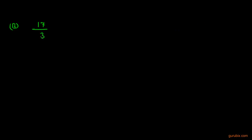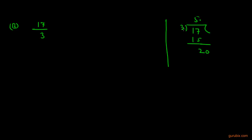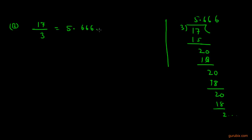Here we have 17 over 3. We see that the denominator is not of the form 2 raised to m multiplied by 5 raised to n. Therefore we simply divide the numerator by the denominator. It goes 5 times; the remainder is 2. We put a decimal point and bring down a 0 — now it goes 6 times; the remainder is 2 again. We bring down another 0 and it goes 6 times again with remainder still 2. Therefore, the decimal expansion of 17 over 3 is 5.666... or we can say 5.6 bar.